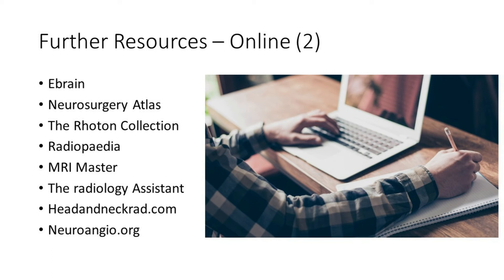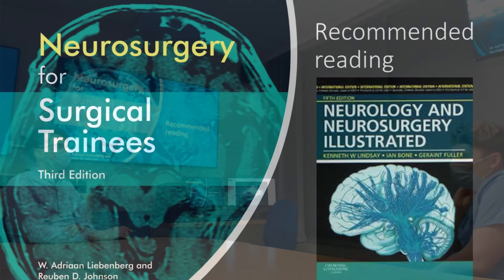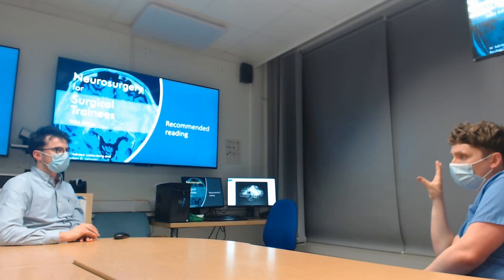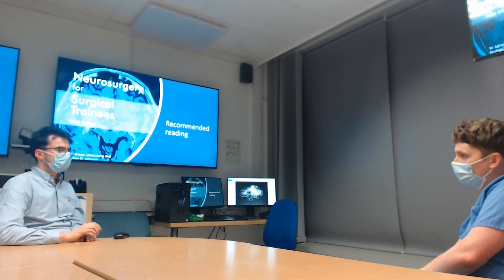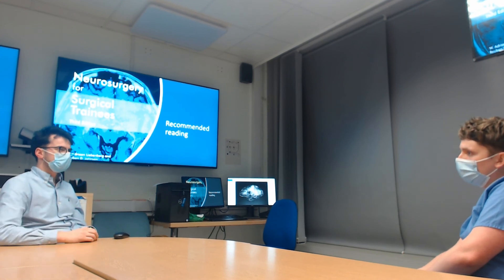A recommended book is 'Neurosurgery for Surgical Trainees', and 'Neurology and Neurosurgery Illustrated' is really useful too. It's quite an old book now but things really haven't changed — it's a great way of depicting the spinal tracts, because anatomy doesn't change, even if tumour technology has entirely moved on. Links to these resources will be in the description below.